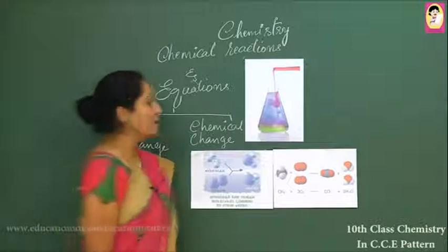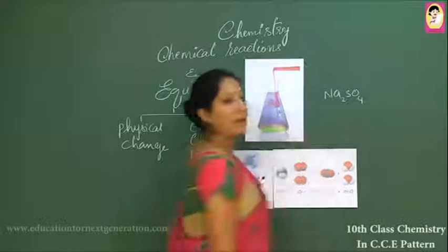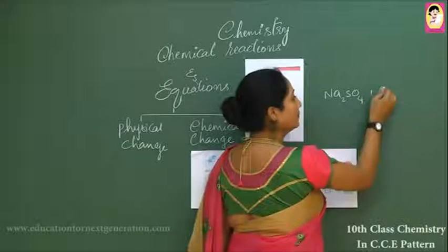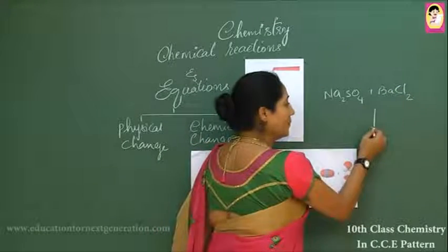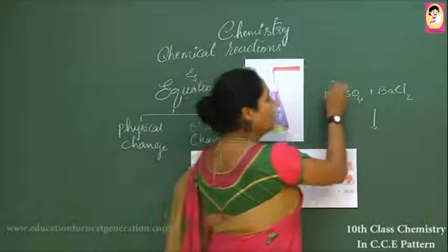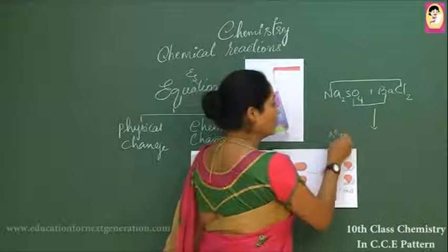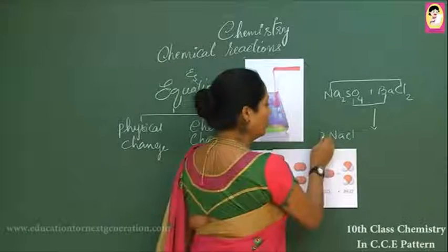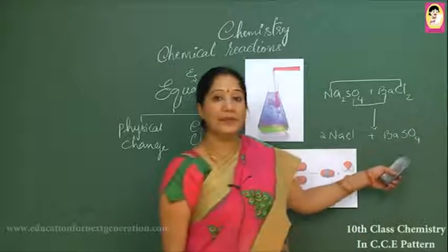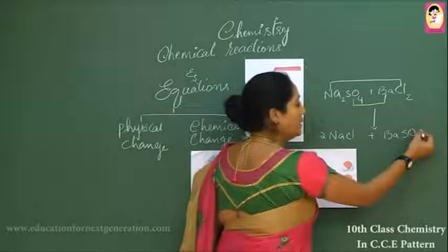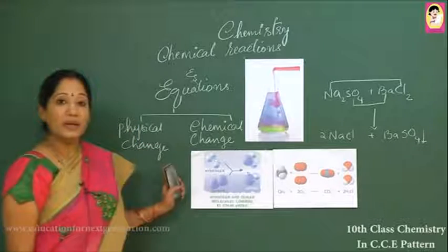Let us take an example: sodium sulfate reacts with barium chloride. A new component is obtained, giving rise to sodium chloride plus barium sulfate. Because barium sulfate is insoluble, it gives rise to a substance called a precipitate.